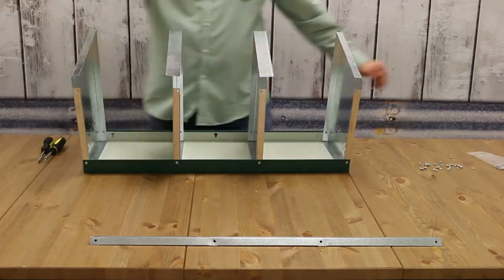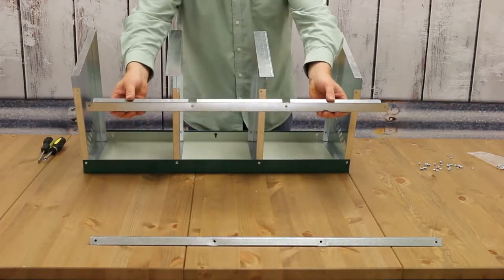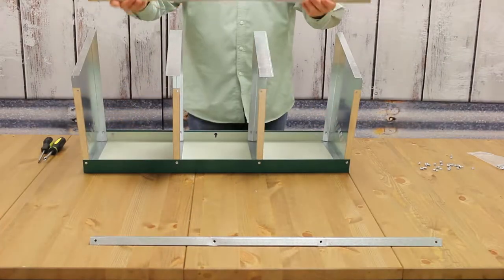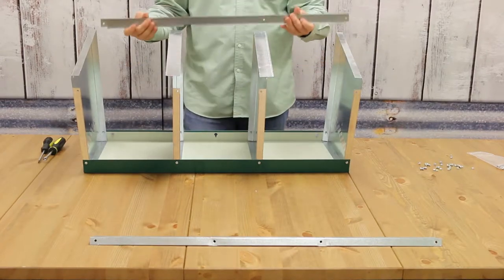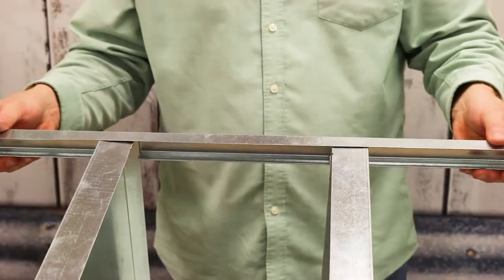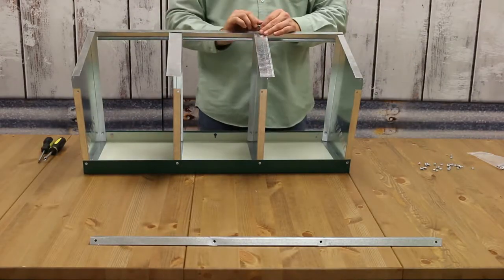The next piece is the basket top. This is going to go on the back of your nesting box. Make sure the notches are facing down and attach it with four more bolts.